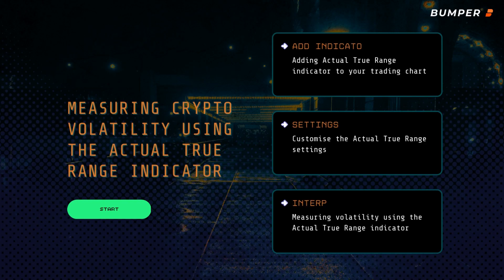This is a tutorial on how to use the Average True Range ATR indicator to measure the volatility of Bitcoin and other cryptos. We're going to explore what ATR is, how to add it to your trading chart, customise the settings and then interpret the data, all in just a few minutes. So let's get started.